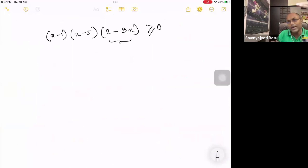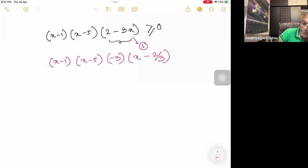So let's start from the point where the difference starts. We have to make the coefficient of x equal to 1. So what do we do? We write this as x minus 1, x minus 5 and take minus 3 as common. It becomes x minus 2 by 3 greater than or equal to 0.